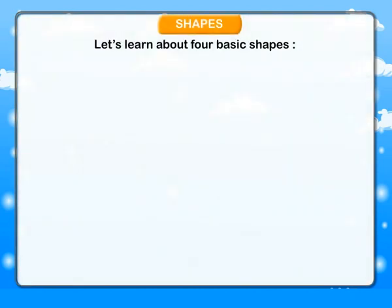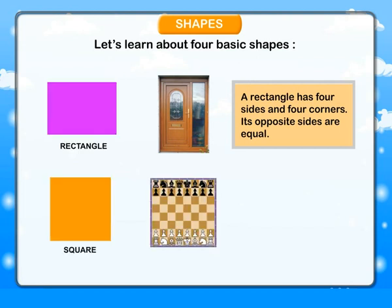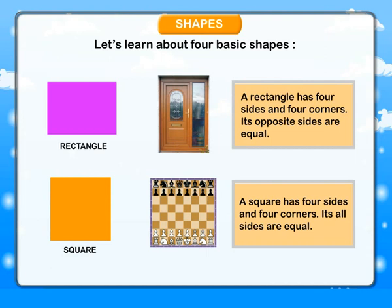Shapes. Let's learn about four basic shapes. Rectangle: a rectangle has four sides and four corners. Its opposite sides are equal. Square: a square has four sides and four corners. Its all sides are equal.